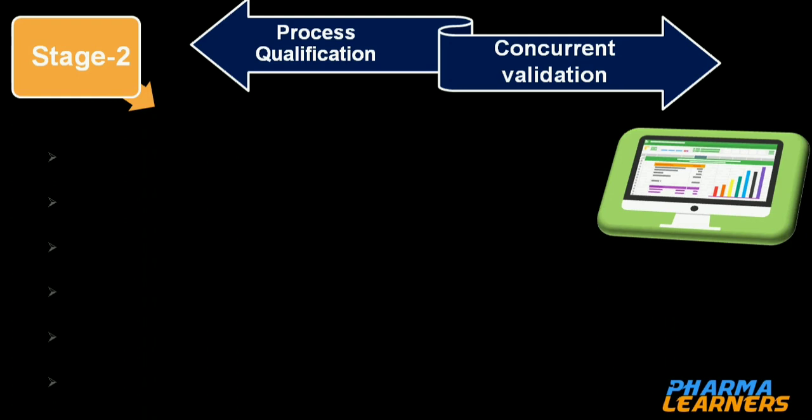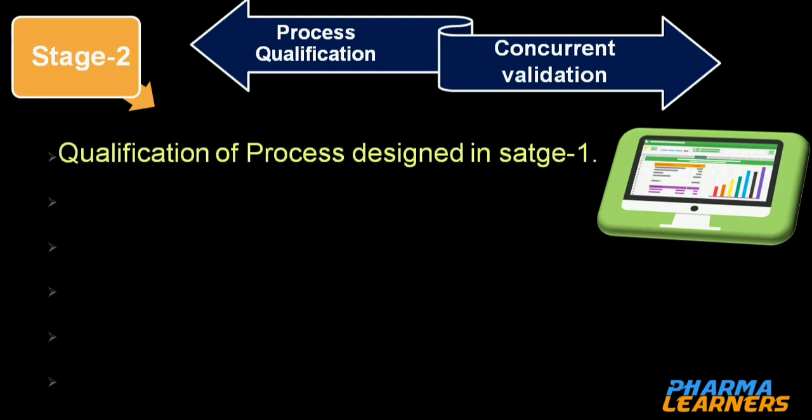Moving on to stage 2, which is process qualification, and correlating this stage with concurrent validation. This is where we qualify the process that we designed in stage 1, and in general terms this is what we call process validation.